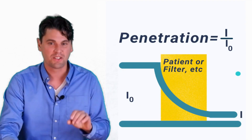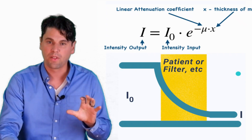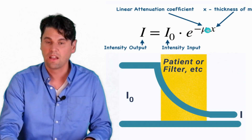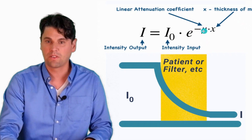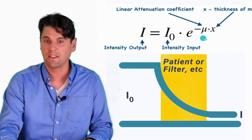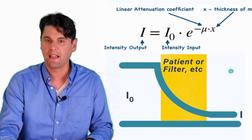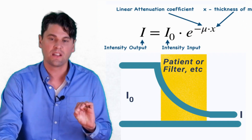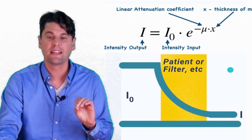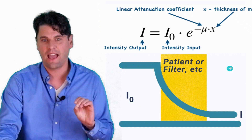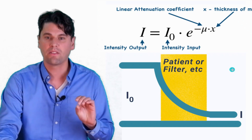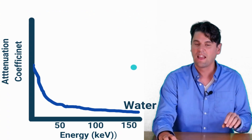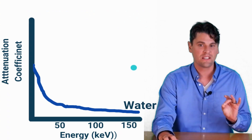We have a video on Hounsfield units if you want to check that one out. For the purpose of today, this attenuation coefficient is up in an exponent in what's called Beer's Law. In actuality, that attenuation coefficient is dependent on the energy of the x-rays. So the x-rays come in with a spectrum, and there's an energy dependence.